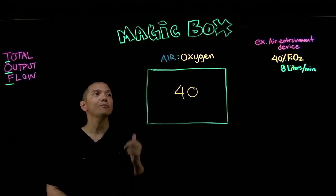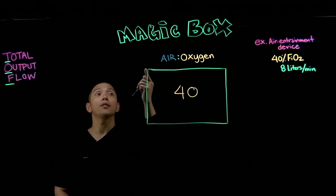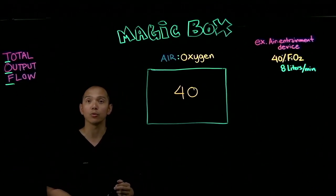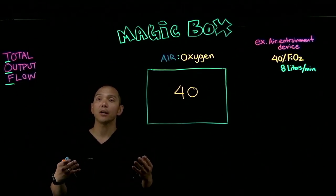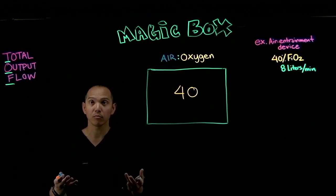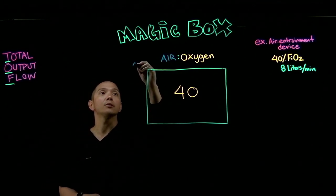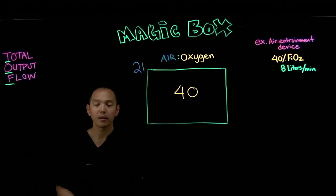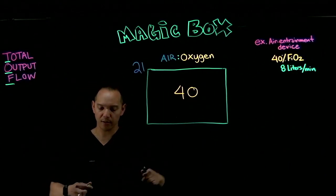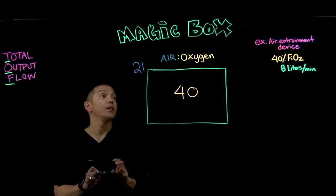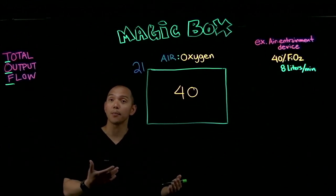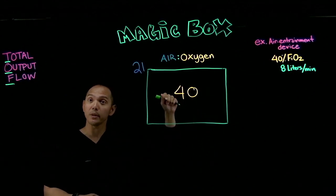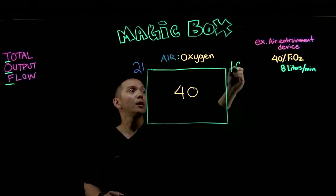On one side we write the FiO2 of room air — how much FiO2 is in room air? That's 21%. So we write 21 on that side. On the other side we write the amount of oxygen coming from our wall source — the flow meter — which is 100% FiO2.